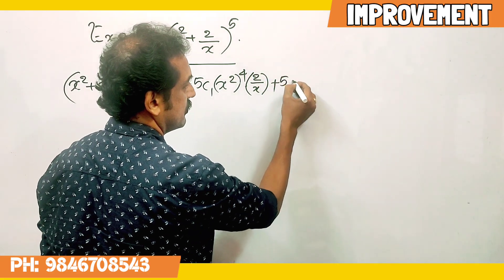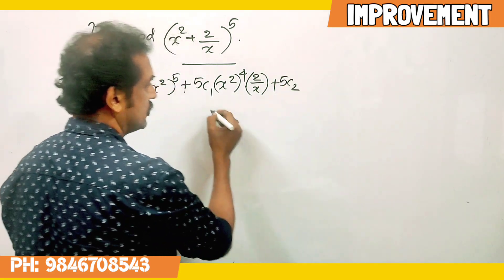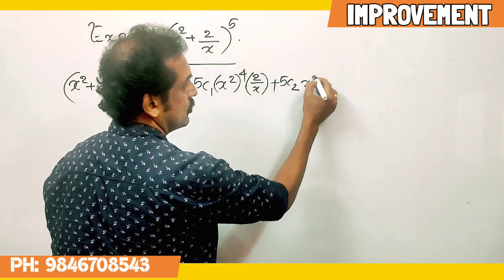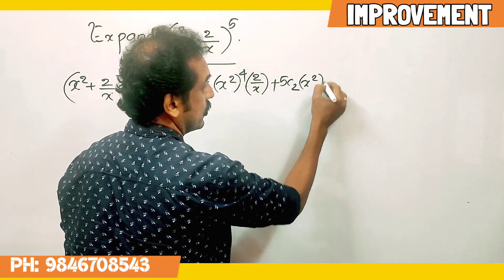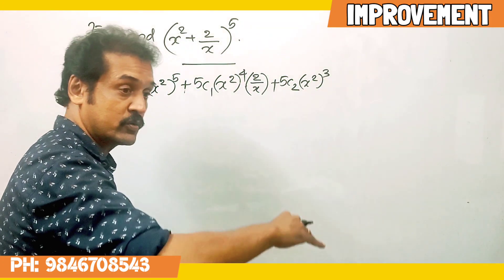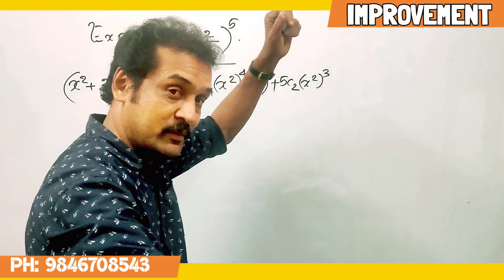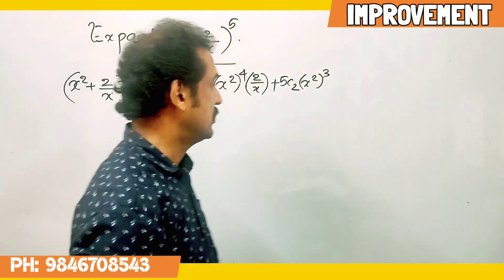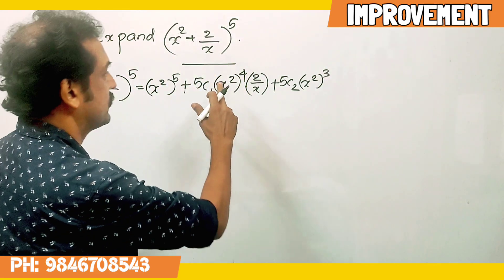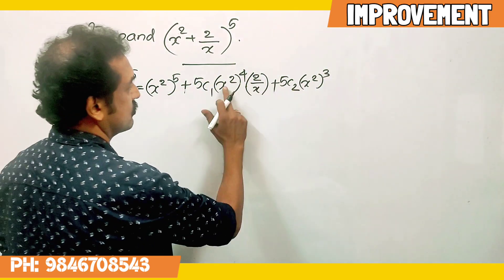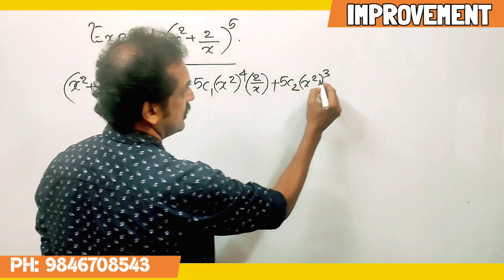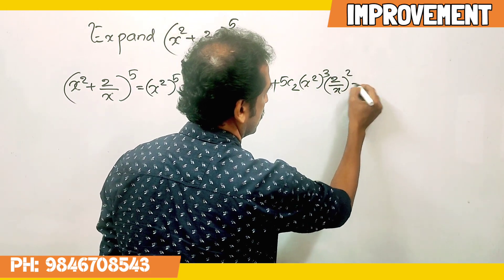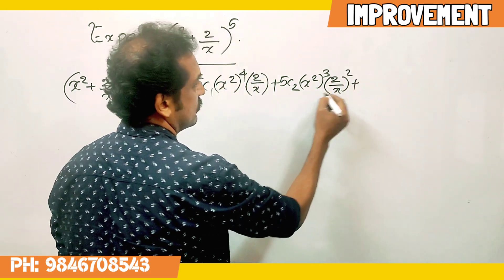The third term: 5C2, x squared raise to 3, into 2 by x whole square.